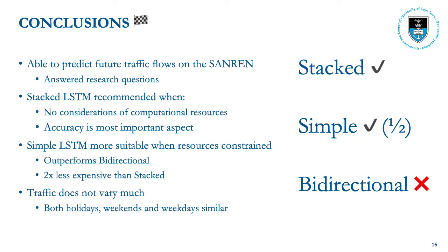In conclusion, we were able to predict future traffic flows on SAMRAN and answer our research questions. We recommend the stacked LSTM when there is no consideration of computational resources and accuracy is the most important aspect, with no regard for training time. The simple LSTM is more suitable when resources are constrained — for a less-resourced network that may not have the resources to train a stacked LSTM — since it is two times less expensive to train than the stacked LSTM and outperforms the bidirectional LSTM. Lastly, we found that traffic does not vary much: holidays, weekends, and weekdays all have similar traffic flows.